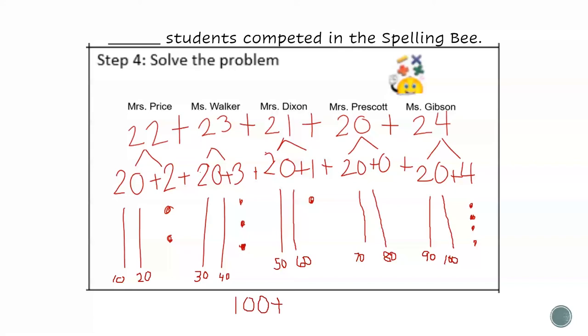2 plus 3 is 5. 5 plus 1 is 6. And 6 plus 4 is 10.